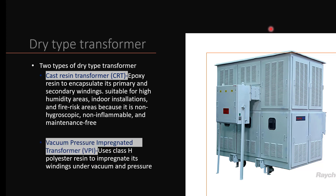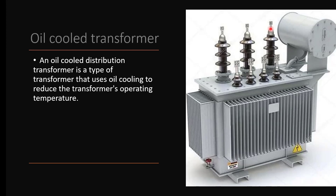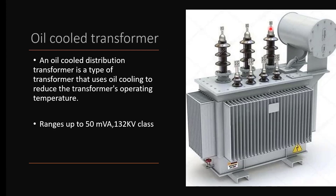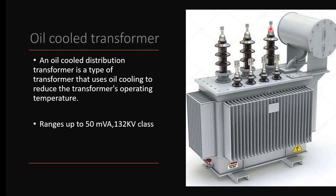Another dry type transformer is the vacuum pressure impregnated transformer (VPI). In this transformer, using pressure under vacuum, a polyester resin is forced to penetrate into the windings. The next commonly used transformer is the oil-cooled transformer. In this type, oil is used as the insulating and cooling medium to reduce the transformer operating temperature — up to 50 MVA, 132 kV class. It is the most commonly used outdoor transformer. If we don't provide a cooling medium, the heat produced in the transformer windings will cause it to burn. To avoid that, oil and air are used as cooling mediums.